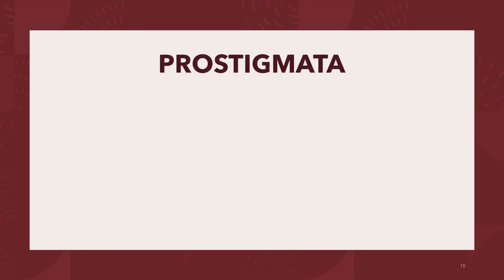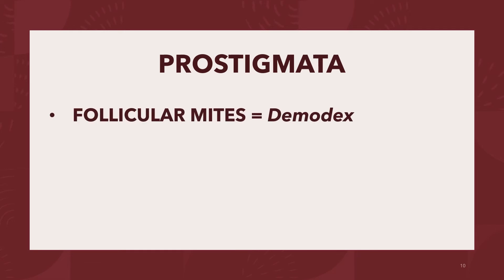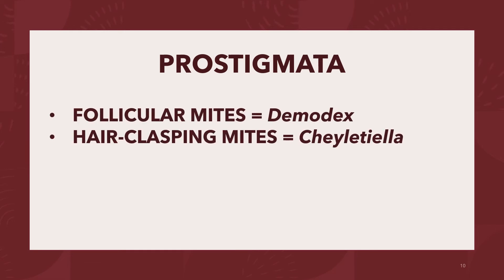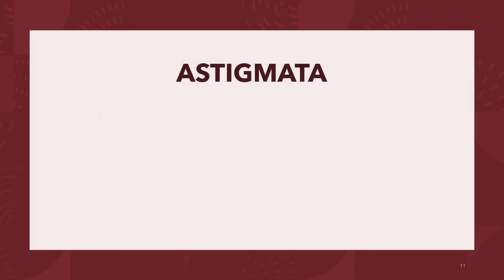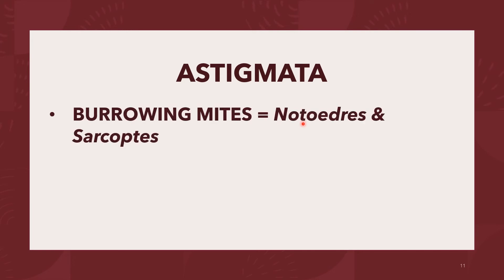The Prostigmata contains the follicular mites, the Demodex, and several hair-clasping mites, Cheyletiella. The Astigmata contains many parasitic forms, including the burrowing mites Notoedres and Sarcoptes, and the ear mite Otodectes.